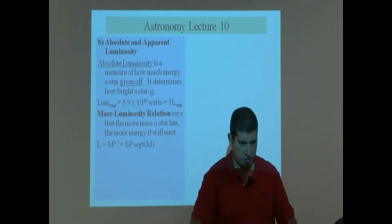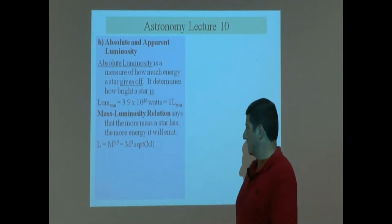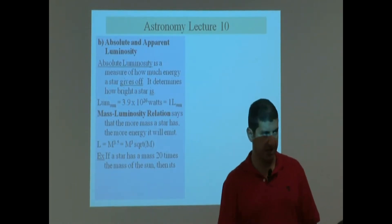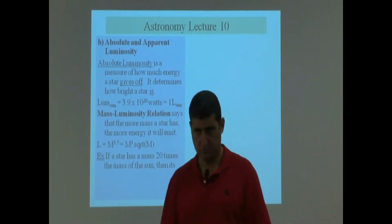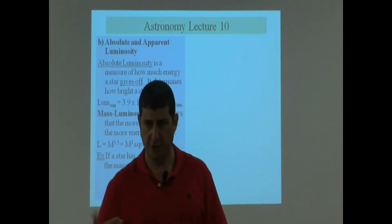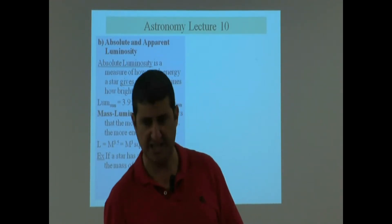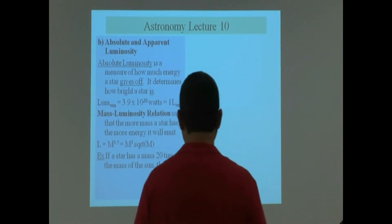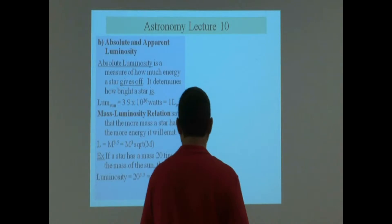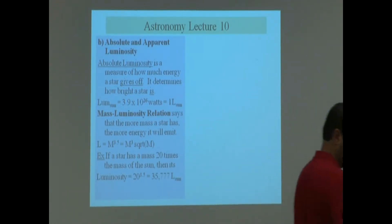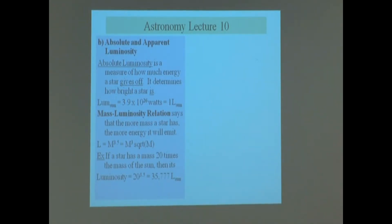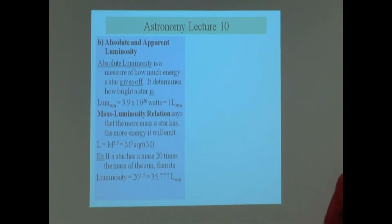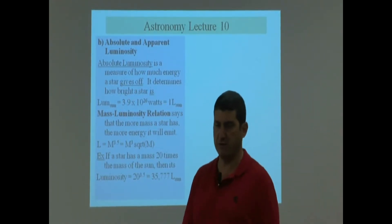This is the first time you're going to get to try your calculator. If a star has a mass 20 times the mass of the Sun, how much more luminosity should it have? Take 20 and raise it to the power 3.5. The answer you get should be 35,000.